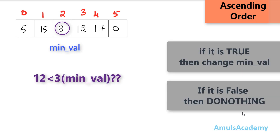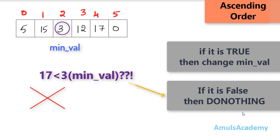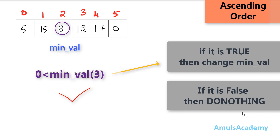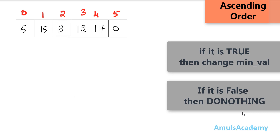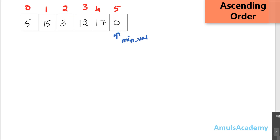I will check whether 12 is smaller than the minimum value 3 — no, condition is false, so I do nothing. I check whether 17 is less than 3 — no. I check whether 0 is less than 3 — yes, condition becomes true, so 0 is the new minimum value. We checked the entire list and found the minimum value is 0, so 0 is the smallest number in this list. We completed the first step: find the smallest number.